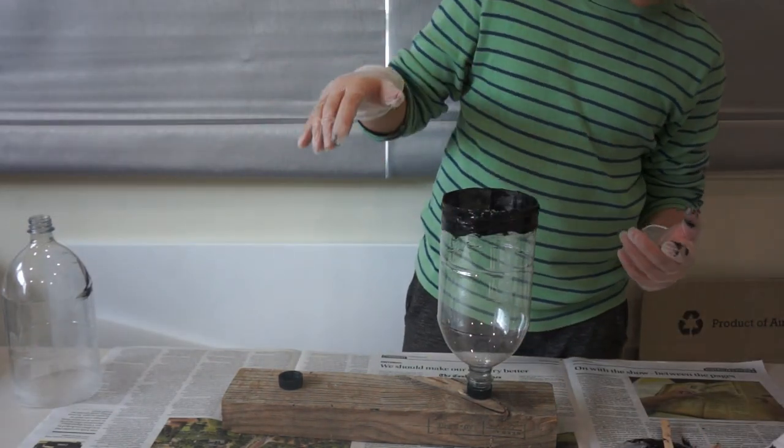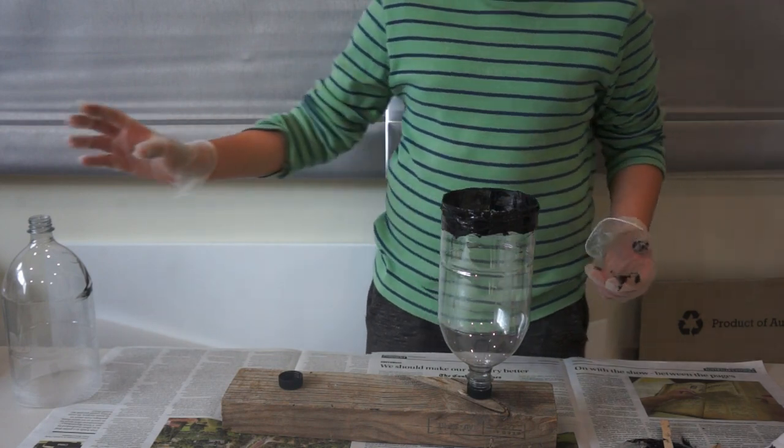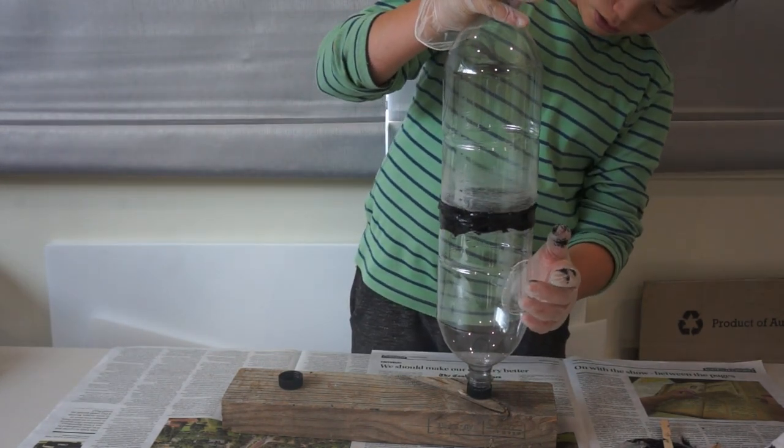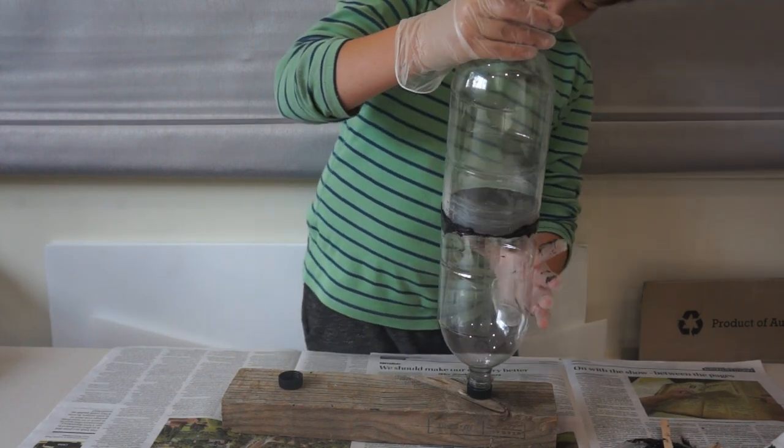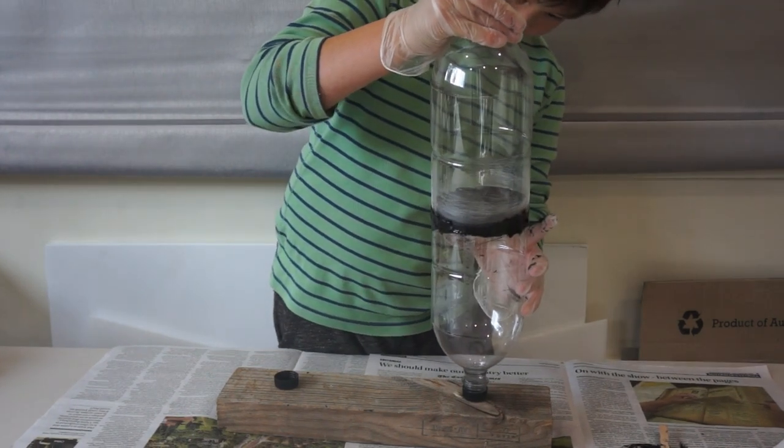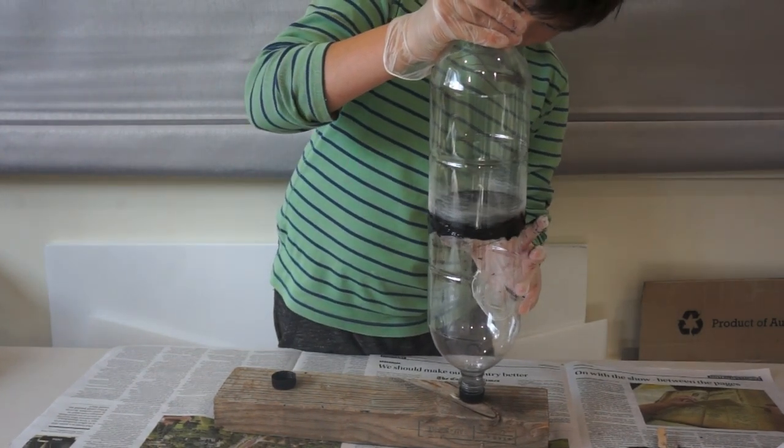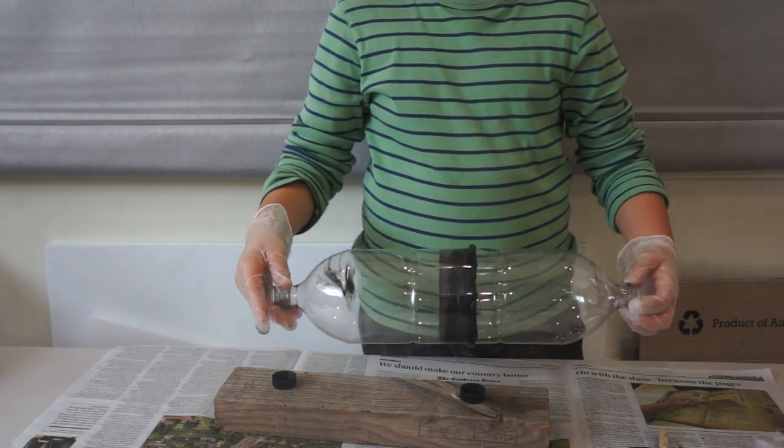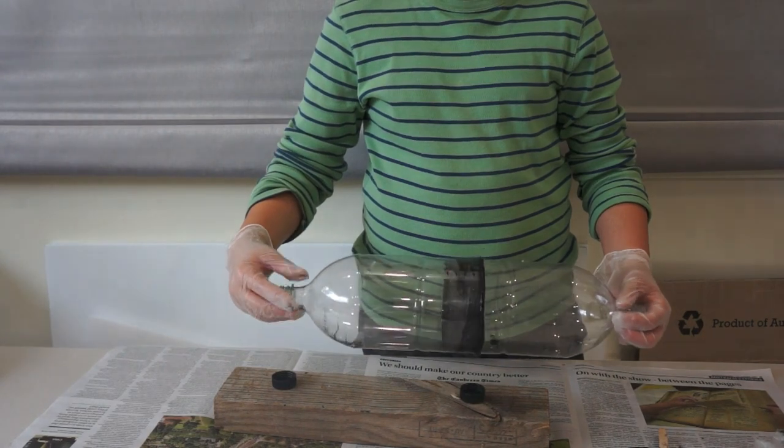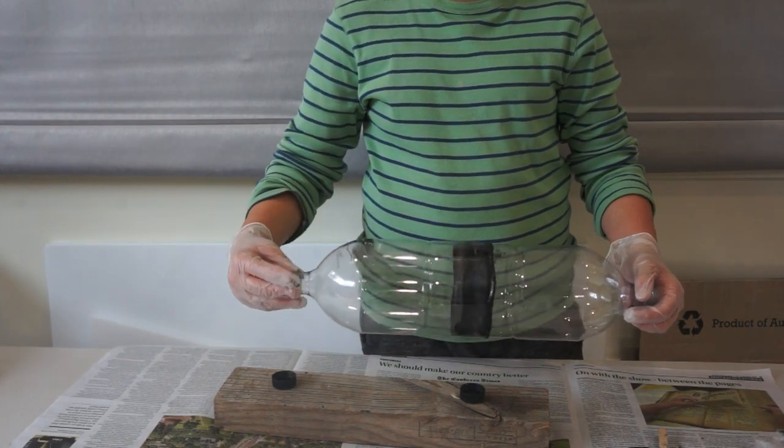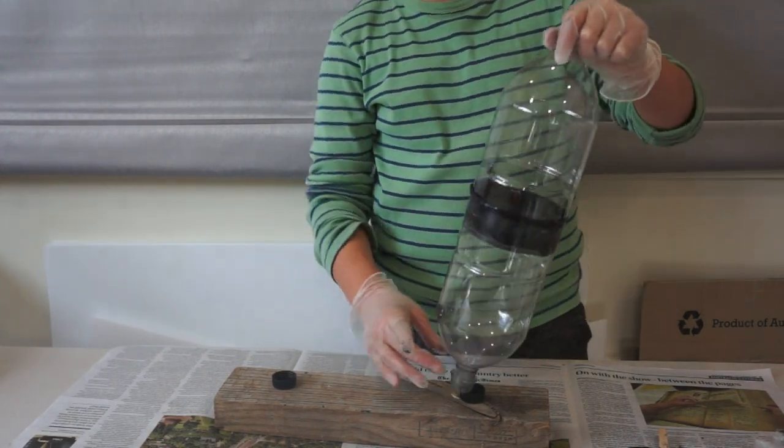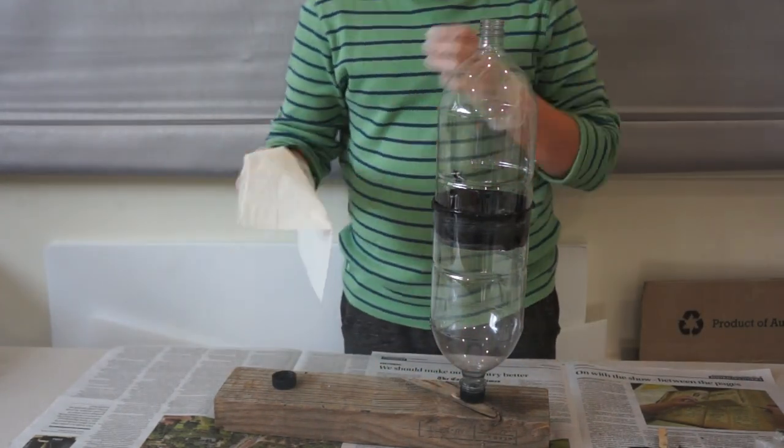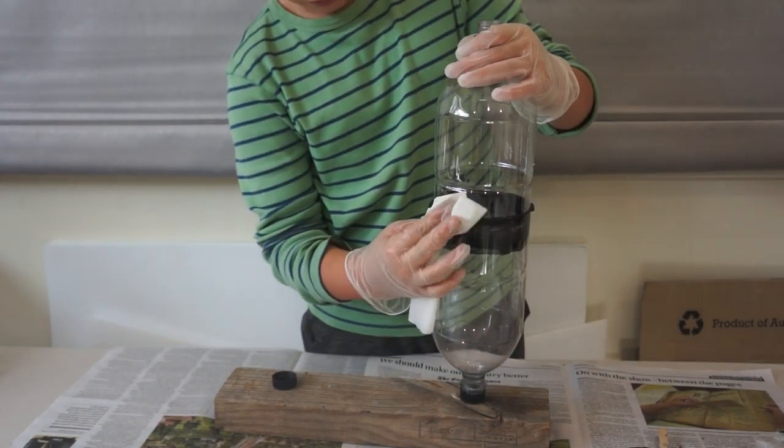Once you have evenly coated one bottle or the inner bottle, get the outer bottle and slowly put it over it. Spin the bottle to make sure they're aligned evenly. If they are, get a tissue or a paper towel and wipe off the excess.